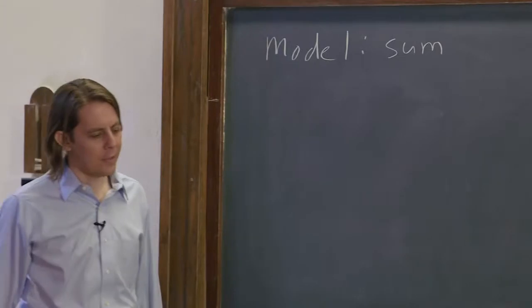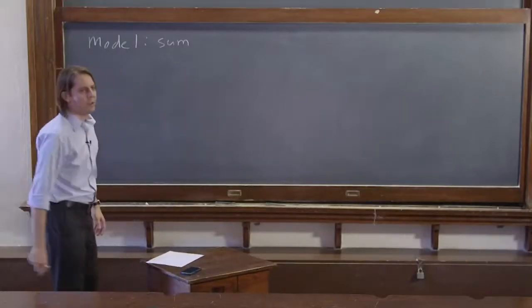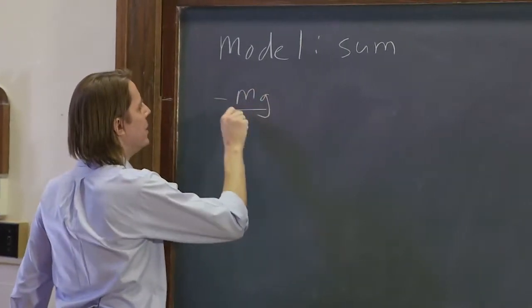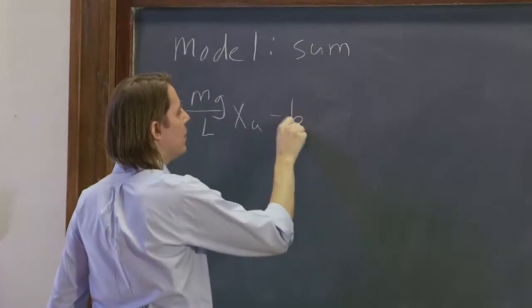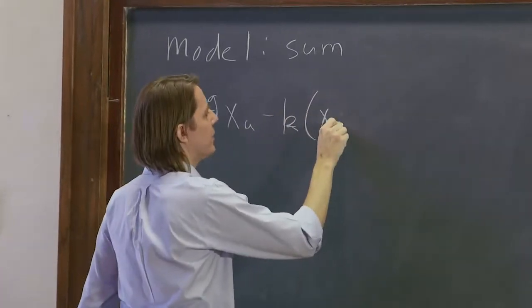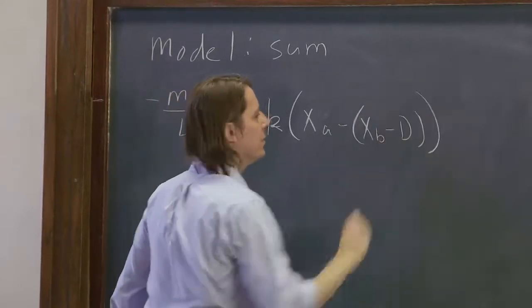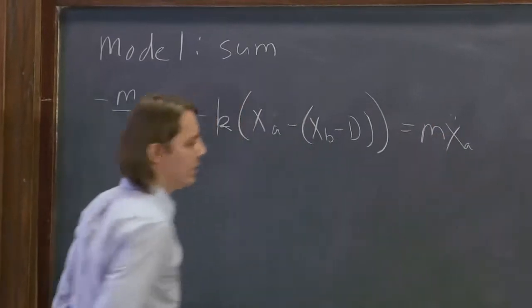Now, the reason I called it sum is the way we're going to find it is we're going to add the two equations of motion and see what happens. So we had minus mg over L, xA minus k, xA minus xB minus d. That was equation 1, equals m xA double dot.